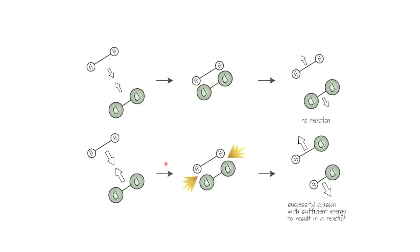Over here, the red and blue have reacted and created a new product, because the collision happened at the correct orientation or the correct angle. It also depends on how much energy these particles have. Here we have a hydrogen molecule coming close to a chlorine molecule, and when they collide together, even if they collide in the correct orientation, it's not possible for the reaction to happen. What's missing is activation energy, and once they have that activation energy, if they collide, they are going to create a new substance, which is HCl.